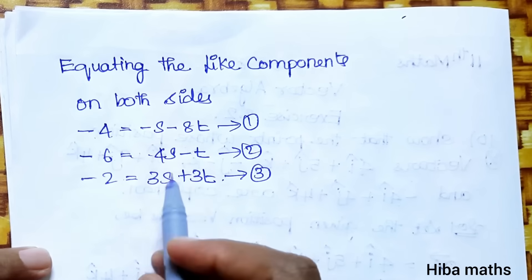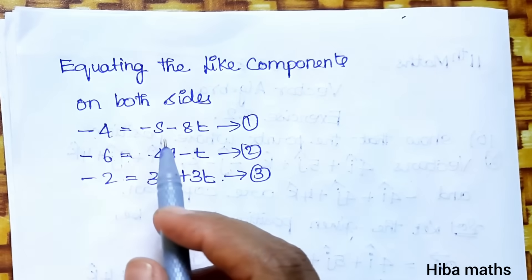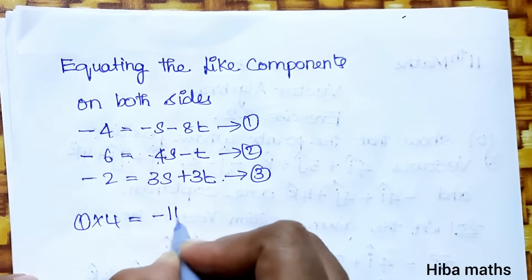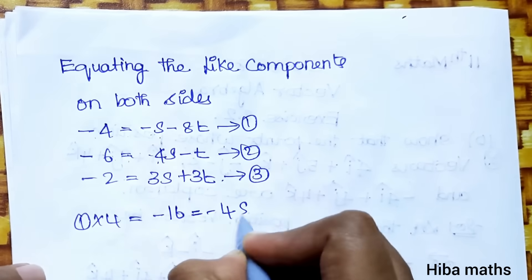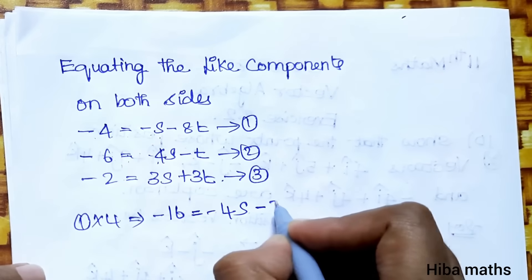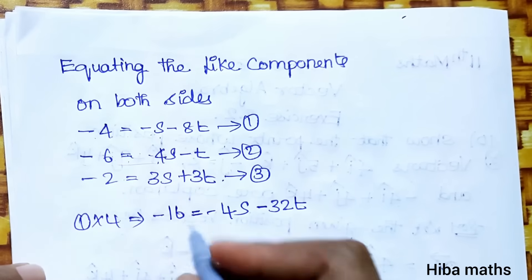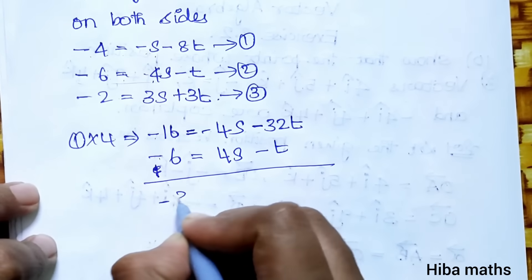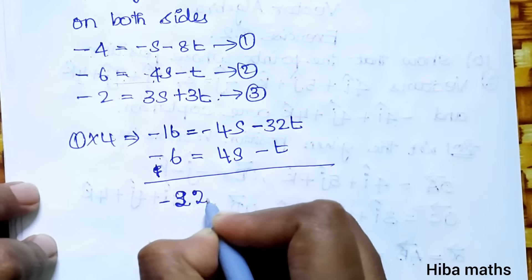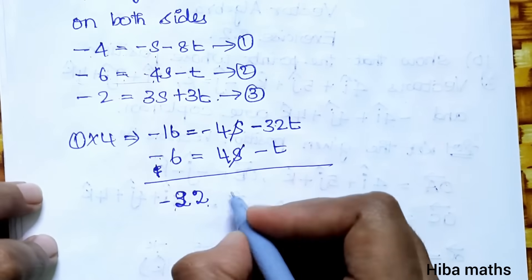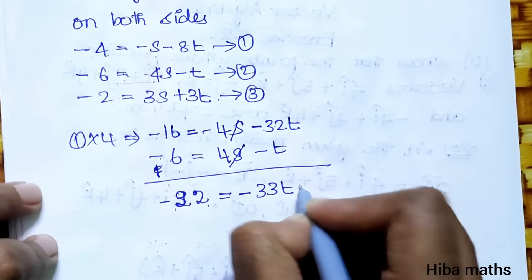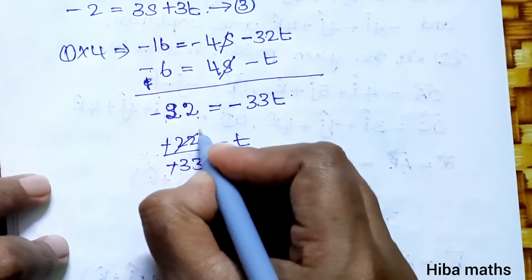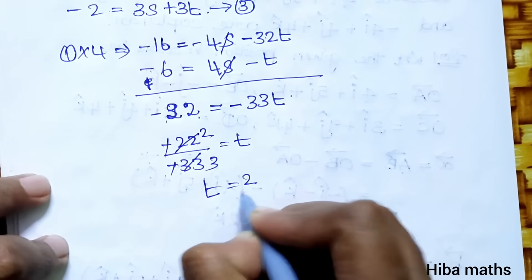Multiply equation 1 by 4: -16 = -4s - 32t. Add to equation 2: -6 = 4s - t. Adding these: -22 = -33t. So t = -22 divided by -33 = 2/3. Thus t = 2/3.